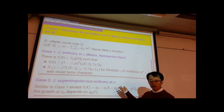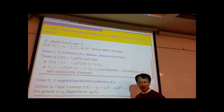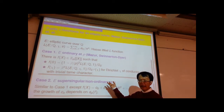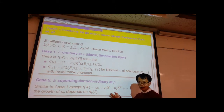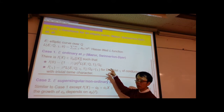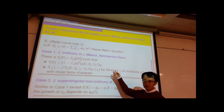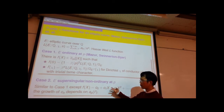Whether ordinary or supersingular, these are the famous p-adic L-functions of elliptic curves, which can also be applied to modular forms. I will skip the construction part to save time. But basically, what they constructed was a p-adic power series of one variable x, which interpolates the Hasse-Weil L-functions of the given elliptic curve, and they constructed the p-adic L-functions for both the ordinary reduction primes and the supersingular non-ordinary reduction primes.